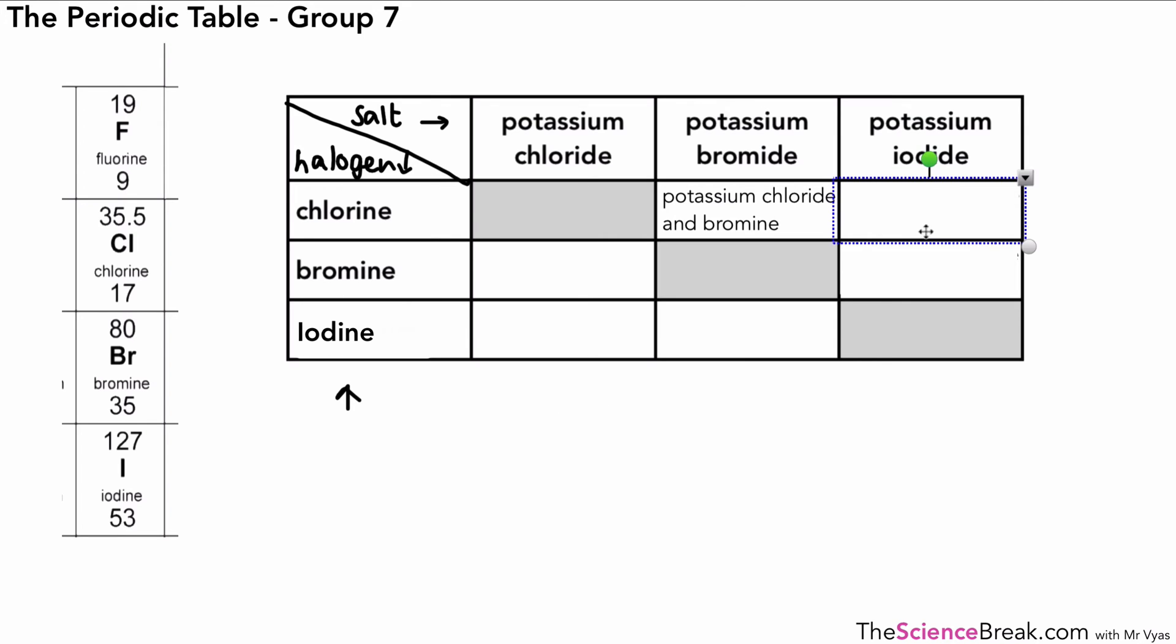So here we go. The first one, the answer is potassium chloride and iodine because the chlorine will displace the iodine because it's more reactive and it's higher up in group seven. For the next one, bromine with potassium iodide, the answer there is potassium bromide and iodine. And this is because bromine is more reactive than iodine. And for these last ones here, we actually have no reaction for the last three because the salt already has the more reactive halogen.